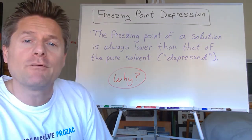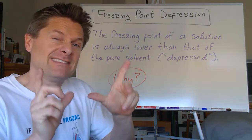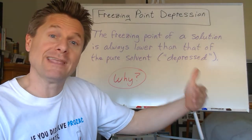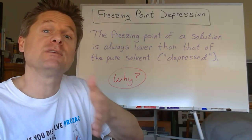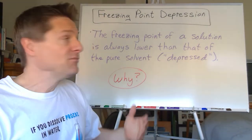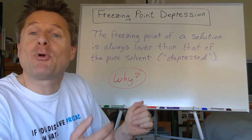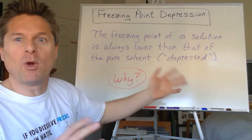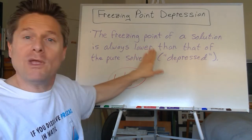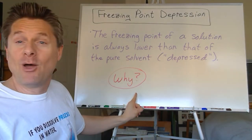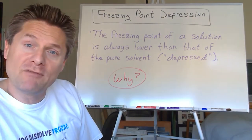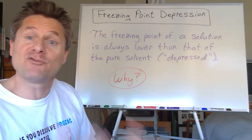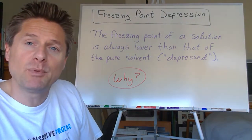If you remember from the last video on boiling point elevation, when we looked at how the phase diagram shifted from the pure solvent to that of the solution, it caused the boiling point to get higher, and it caused the freezing point to be lower than that of the pure solvent. So the freezing point is depressed. The freezing point of a solution is always lower than that of the pure solvent. Why? We'll look at it from a molecular point of view, like we did with the other colligative properties — how solute particles would cause the freezing point to be lower.